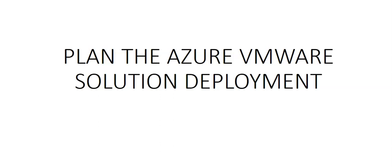Hi, my name is Ashish and in this video we will see planning the Azure VMware Solution deployment. We will see how to identify the subscription, the resource group, the region or the location. We will define the resource names, how to identify the size of the host, determine the number of clusters and hosts, request a host quota from within the Azure subscription, define the IP address segment for private cloud management, define the IP address segment for VM workloads, define the virtual network gateway, define VMware HCX network segments, and determine whether to extend your networks or not.